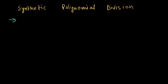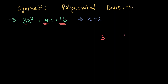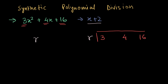Let's take the previous polynomial as our example: 3x squared plus 4x plus 16, with divisor x plus 2. The first step is to place the coefficients — 3, 4, 16 — with some space in between, and draw a line up top. Now, the new divisor we place here needs to be in the form of r, where our old divisor is in the form of x minus r.